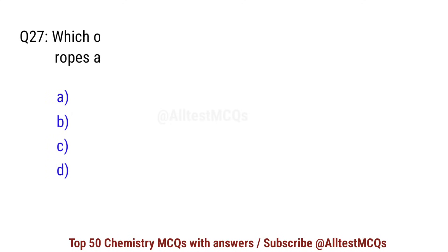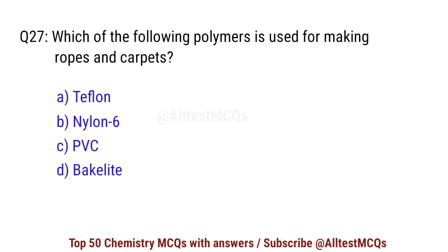Question number 27. Which of the following polymers is used for making ropes and carpets? Right option is B: nylon 6.